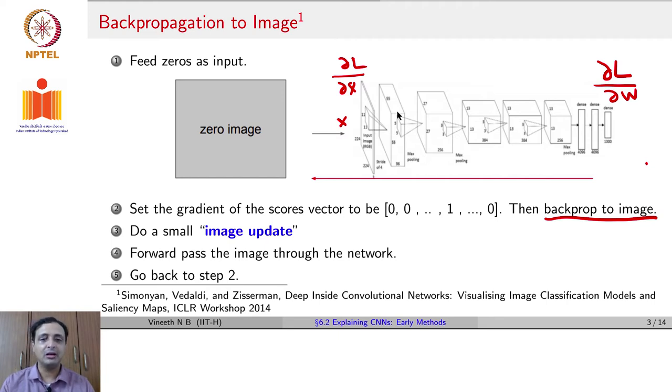Once you have such a gradient, we try to do an image update. And how do we do the image update? We do it using gradient ascent. So far, we spoke about gradient descent as a methodology to minimize an objective function. In gradient ascent, we maximize an objective function and we will see this objective function in the next slide. So we will use gradient ascent to get the final image.